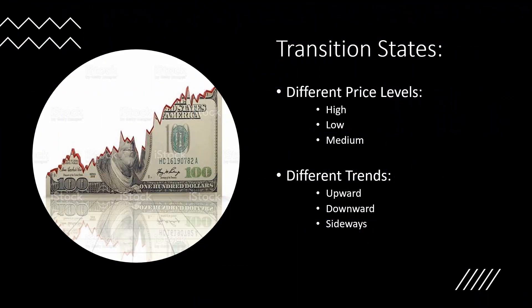To use a Markov chain for stock price prediction, we need to define the states and probabilities of transition between them. For example, the states could be different price levels such as low, medium, and high, or they could be different trends such as upward, downward, and sideways.